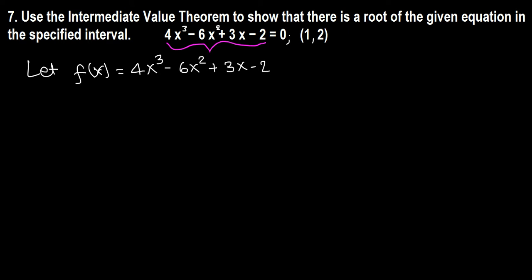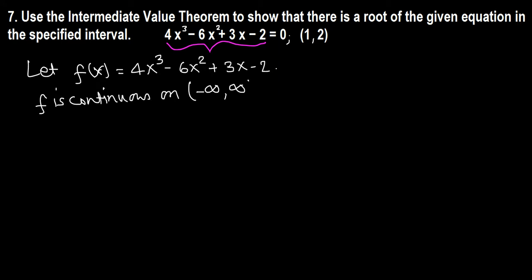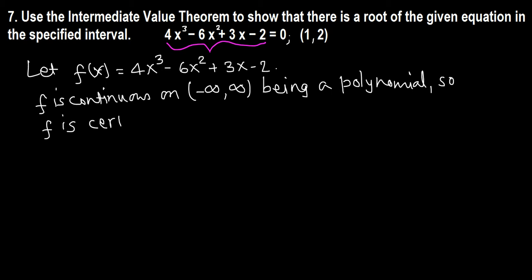To apply the intermediate value theorem, we need to show this function is continuous on the closed interval containing [1, 2]. Note that this function f is a polynomial, so it's continuous everywhere — from negative infinity to positive infinity. So f is certainly continuous on the closed interval [1, 2].